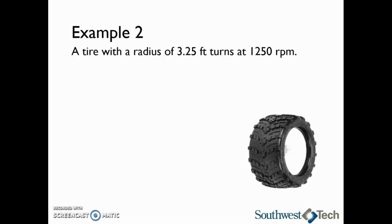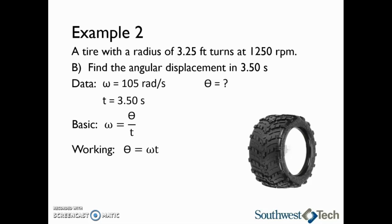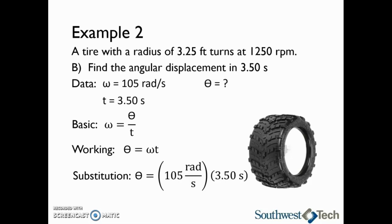Now that we have the angular speed in radians per second, we can find the angular displacement in 3.50 seconds. We know omega is 105 radians per second and the time is 3.50 seconds. We are trying to find the angular displacement theta. Using the equation omega equals theta divided by t, we rearrange to get theta equals omega times t. Substituting in, theta equals 105 radians per second times 3.50 seconds. The units of seconds cancel, giving us theta equals 368 radians.